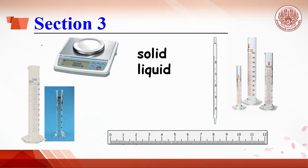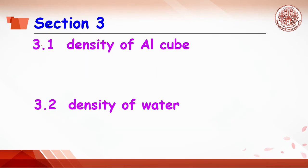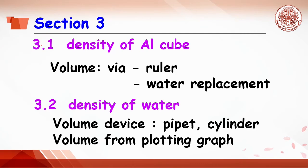Section 3: Determination of density of solid and liquid. This section involves the calculation of significant figures and is divided into two parts: determination of the density of an aluminum cube using a ruler and water displacement, and determination of the density of water in different ways.